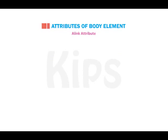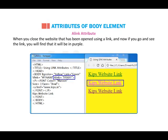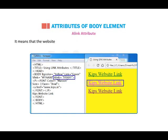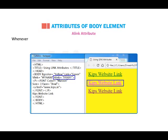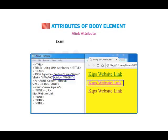A-Link Attribute. When you close the website that has been opened using a link and then go back to see the link, you will find that it will be in purple. This means that the website connected to the link has already been opened. Whenever you open the website containing the link, until the history is erased, the link appears in purple only. Example: body alink="#ff00ff".